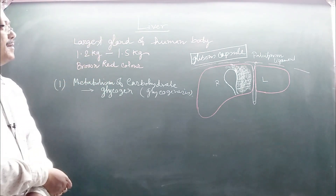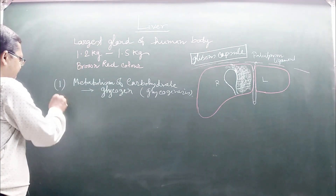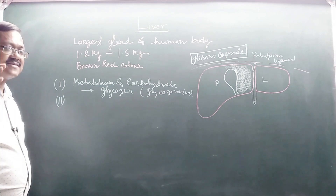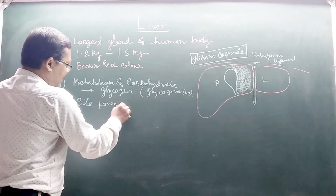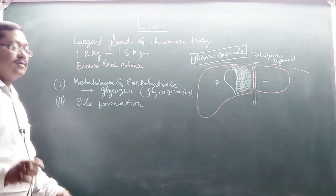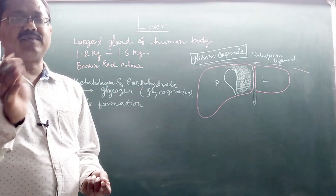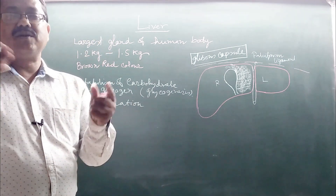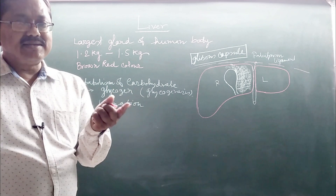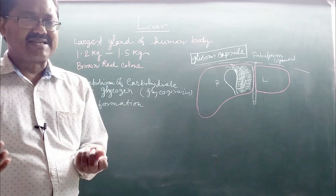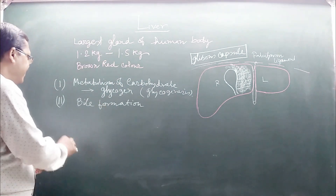The second important function is that in the digestive system, the liver plays a significant role in the formation of bile. Bile is a digestive juice although it does not contain any enzyme. It reduces the surface tension of fatty materials, fragmenting them into smaller particles called micelles, which have more surface area than large fatty droplets.